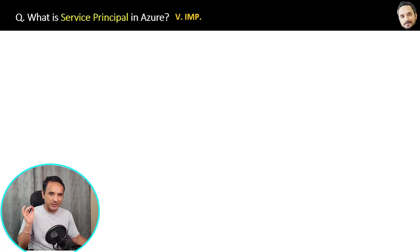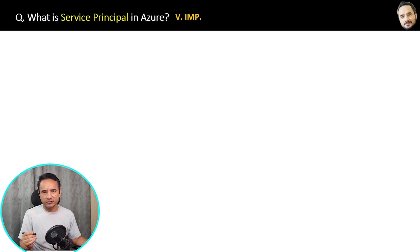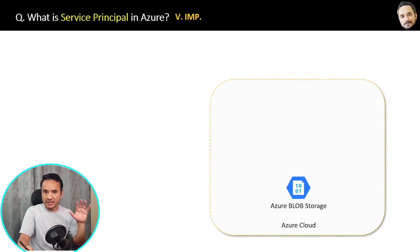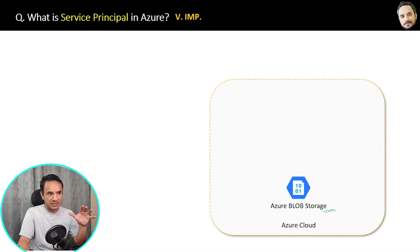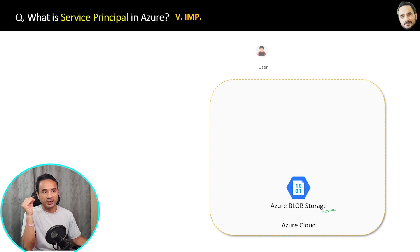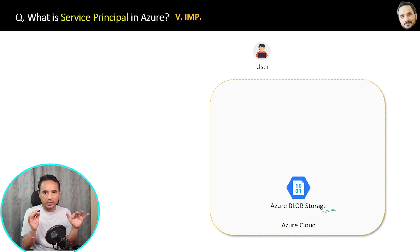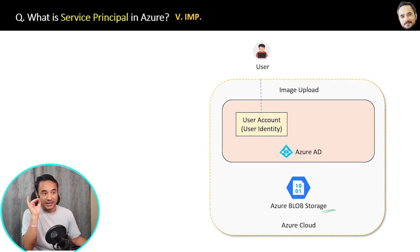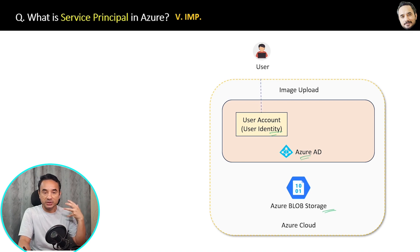What is service principal in Azure? After listening to the answer you will be 100% confident on this concept. Let me explain with the help of an example. Suppose there is an Azure Blob Storage resource inside the Azure cloud where your users are uploading images via some application. One simple way to upload an image is through a regular user account — your user logs in and uploads the images. The users are authenticated by their credentials, and that authentication is done by Azure AD. That is called user identity.